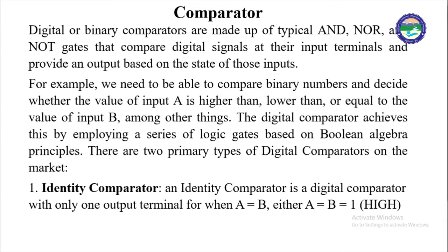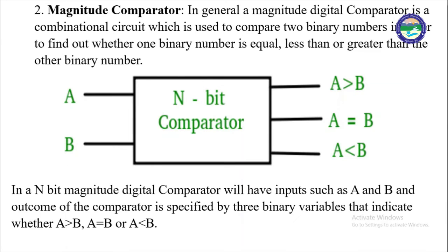Primarily, we have mainly two types of digital comparators. The first one is the identity comparator. An identity comparator is a digital comparator which has only one output terminal, meaning we will get only one output for A equal to B. The other type of comparator is the magnitude comparator.